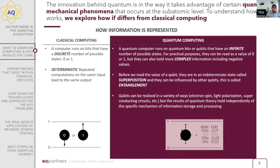A quantum computer runs on quantum bits, or qubits, that actually have an infinite number of possible states — they can be zero or one, or in any state in between. Many people ask why we have a cat in the presentation: it's an acknowledgement to Schrödinger's cat, because when a qubit is in superposition, it can be in zero and one at the same time. A good analogy is a coin spinning on a table — while it's spinning, it can be thought of as being heads and tails both at the same time.